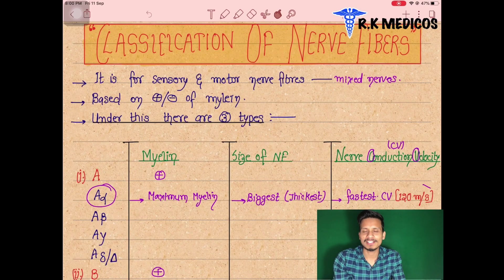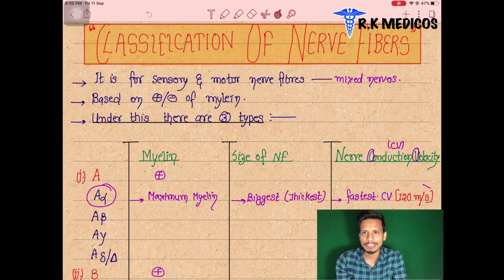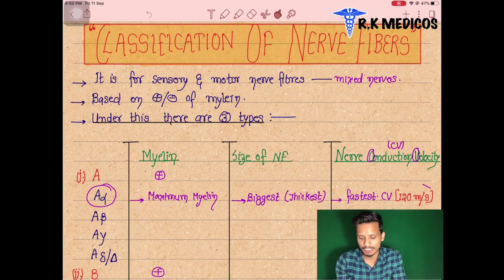Hello, welcome to our coaching academy. In this section we are going to discuss the nervous physiology. We have already discussed many parts, and now here the next part of the nervous physiology is the classification of nerve fibers.